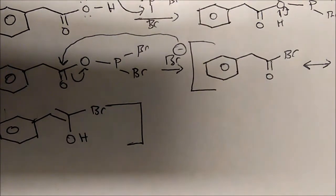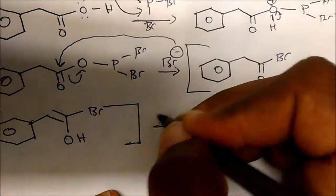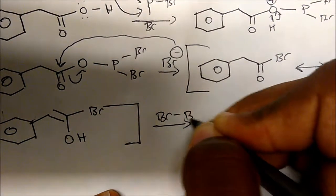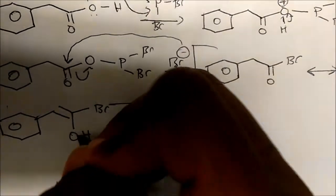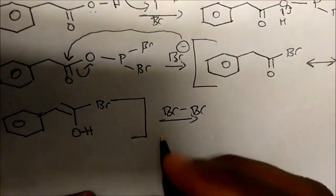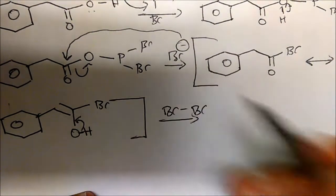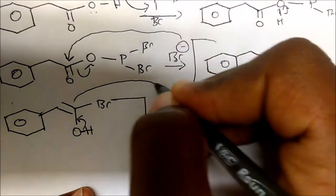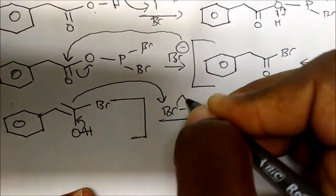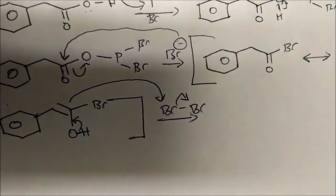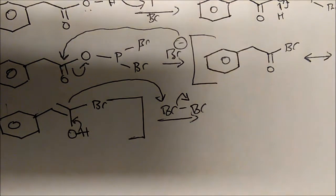Now what's gonna end up happening? In this step now, we're gonna have BR2 that comes in as a halogen. And this bond between the oxygen and the hydrogen will actually come in, form a double bond. And this alkene will now be nucleophilic. So it will attack the bromine and expel one of the bromine atoms. Now what happens from there?